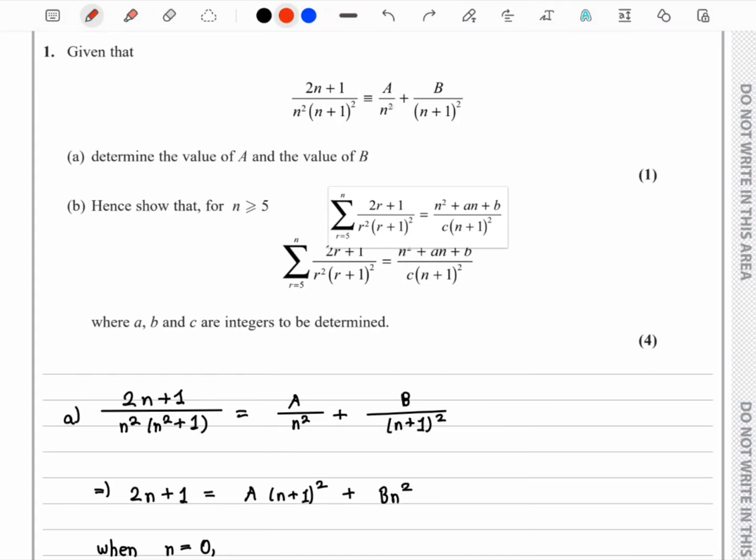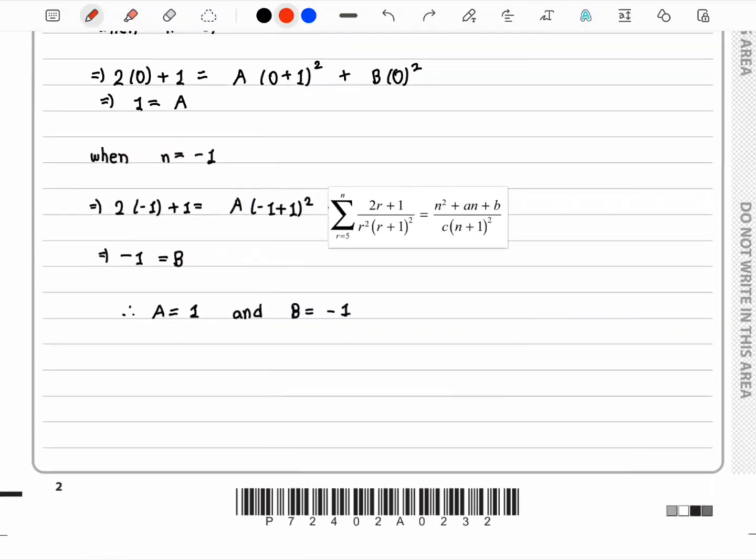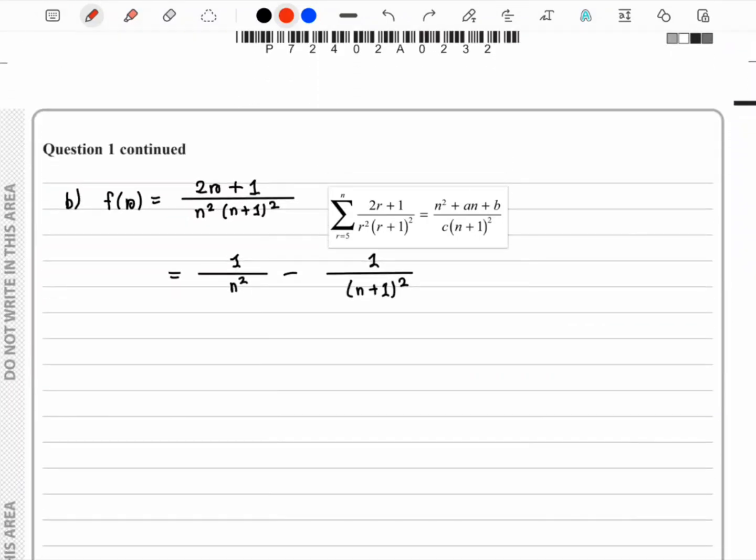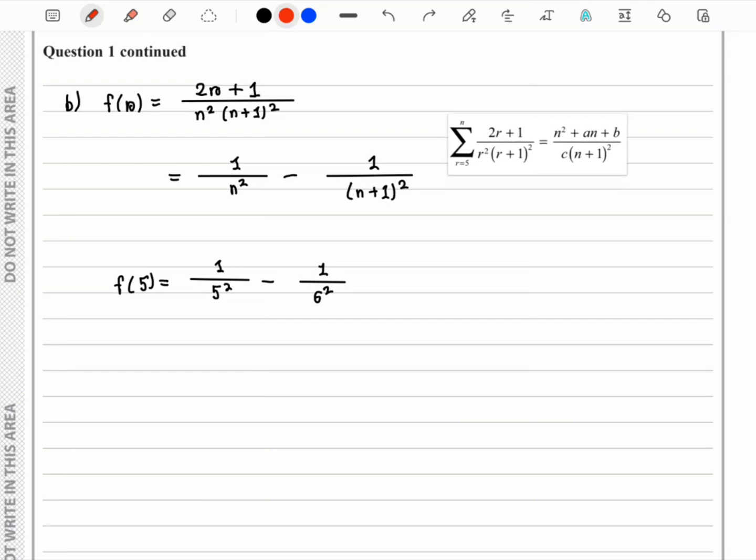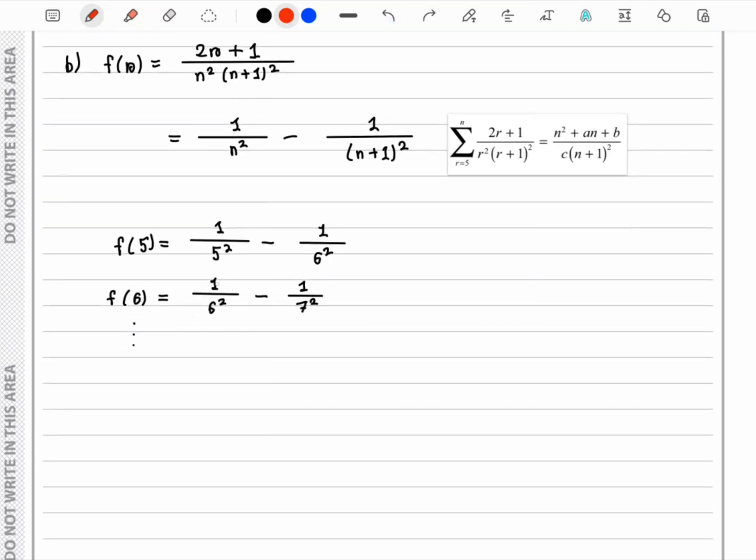We know the values of A and B, and using the method of differences we can find the summation. We calculate f(5) and then write down f(6) as well. We see that 1/6² cancels out, then 1/7² will cancel out with f(7). So we are only left with 1/5² over here.